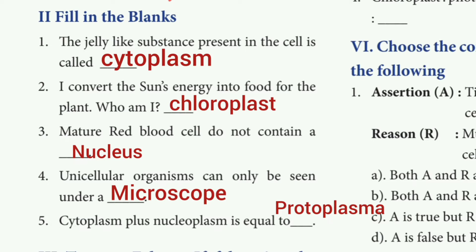Third one: mature red blood cells do not contain a nucleus. Fourth one: unicellular organisms can only be seen under a microscope. Fifth one: cytoplasm plus nucleoplasm is equal to protoplasm.